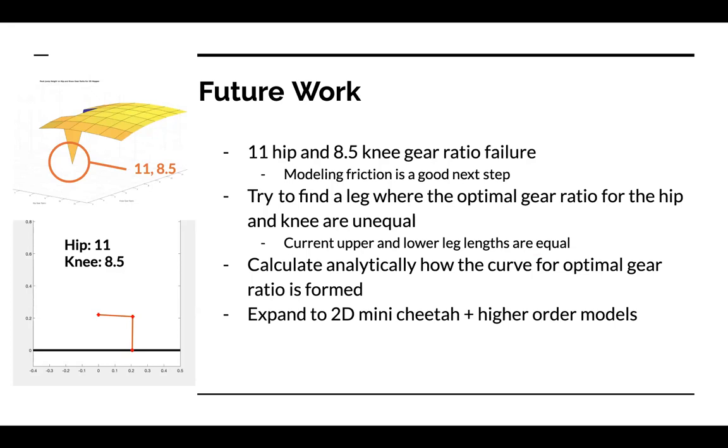Second, we think it would be interesting to find a solution that has asymmetric gear ratios between the hip and the knee. It is possible that gear ratios were equal because of the symmetry of the leg, so changing leg parameters to see their effect on optimal solution would be interesting.